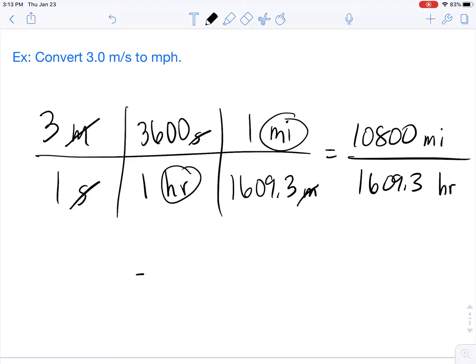If we simplify that, we get a final answer of 6.71 miles per hour. As always, I hope that this video was helpful in helping you solve your own physics problem.